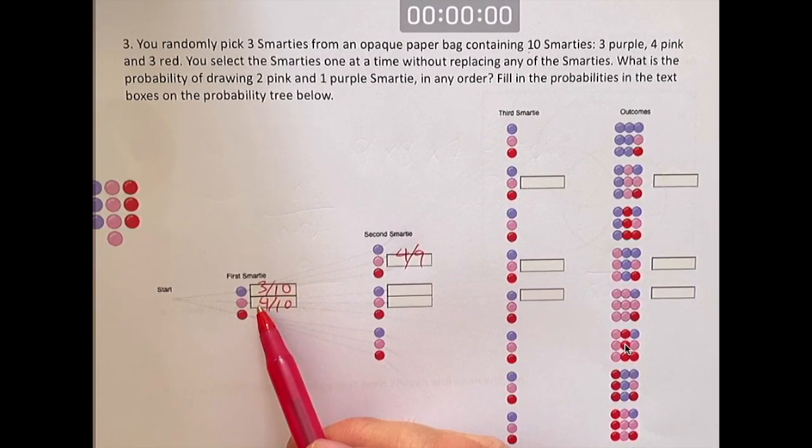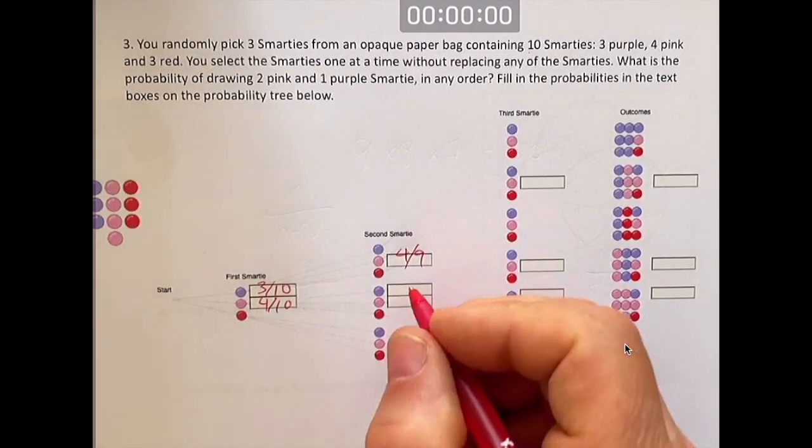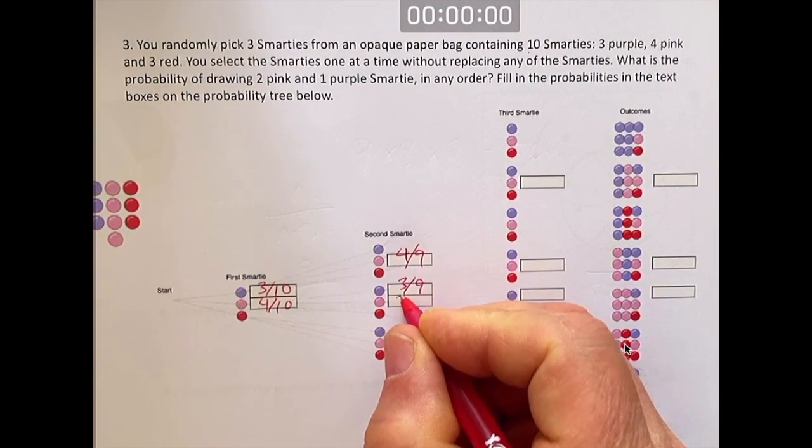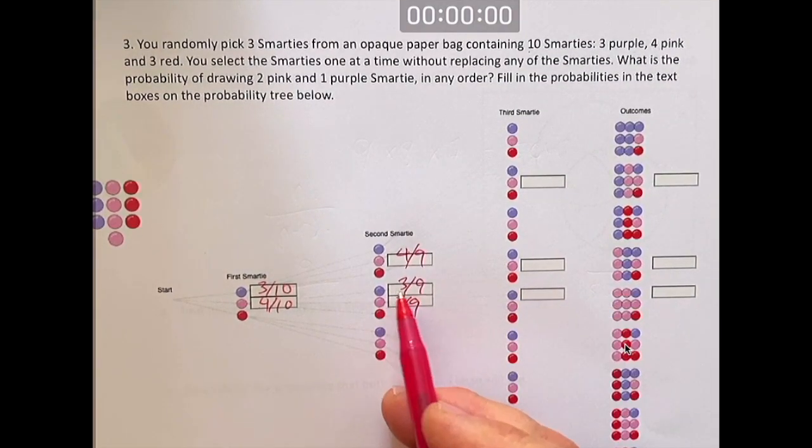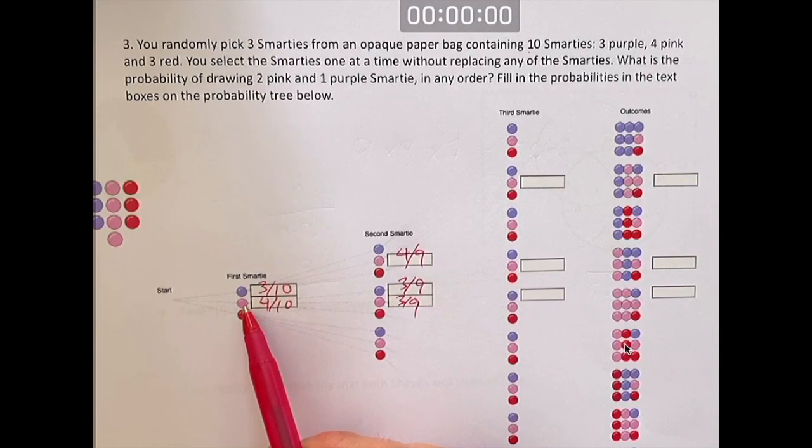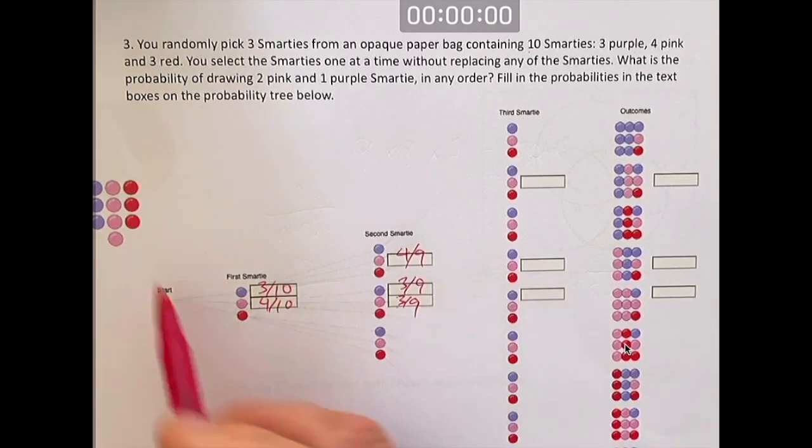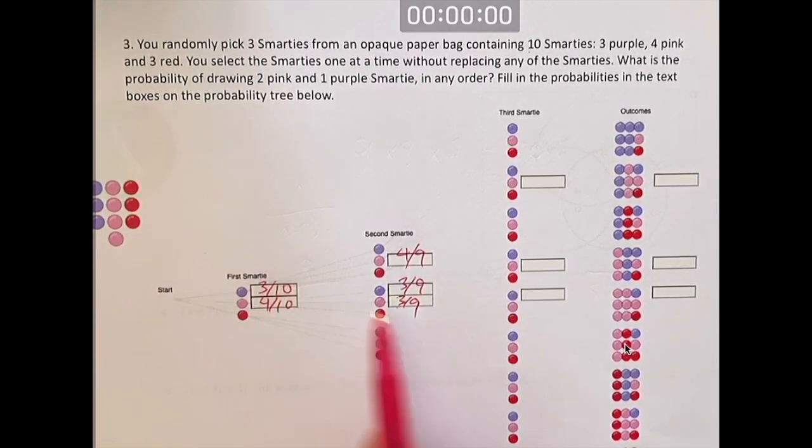If you took a pink out first, how many purples do you have? Well, you'd still have three purples. You haven't taken any out. Three out of nine. Why am I doing three out of nine for the pink? I took a pink out. There are no longer four pink Smarties. There are only three left because I took out a Smartie before. There are only nine, so three out of nine.